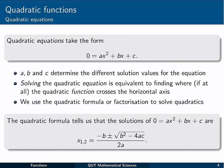Now that's a quadratic function. A quadratic equation takes the form given here, where we've got the f of x set equal to 0. So 0 equals ax squared plus bx plus c. There is a slight difference between a quadratic equation and a quadratic function. Now, a, b and c in this case determine the different solution values for the equation, or the values of x that make the equation true.